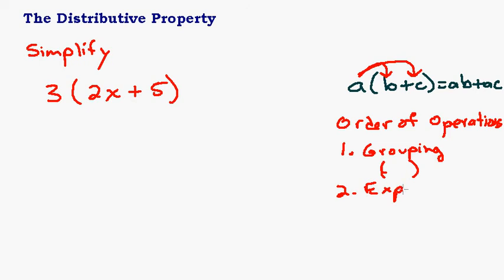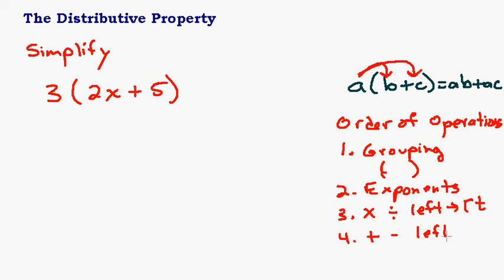Second is exponents. Third is any multiplication and division, left to right. And lastly, addition and subtraction, also left to right. So grouping symbols — I'm supposed to do what's inside the parentheses first. But here's the problem: you can't do what's inside the parentheses, because 2x and 5 are not like terms. We cannot combine them and say that's 7x — that's not correct. 2x plus 5x would be 7x, but 2x plus 5 is just 2x plus 5. I cannot simplify that anymore.